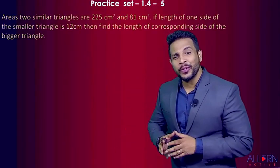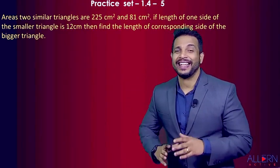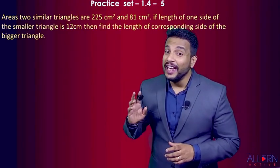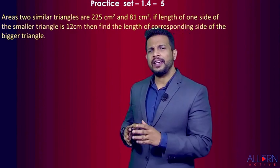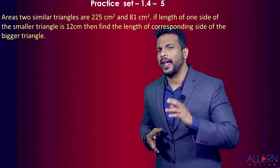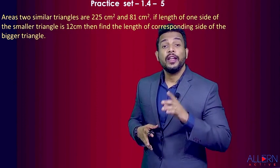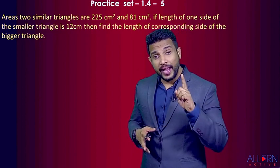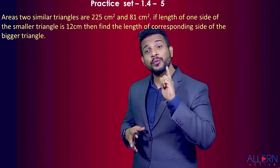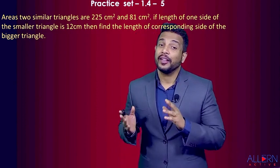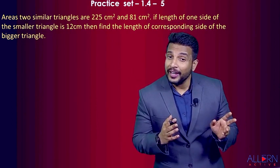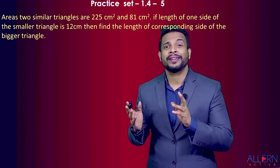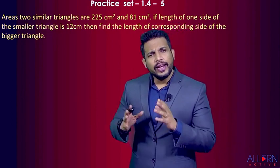Let's do a very simple sum. The problem says that the areas of two similar triangles are 225 cm² and 81 cm². If the length of one side of the smaller triangle is 12 cm, find the length of the corresponding side of the bigger triangle.